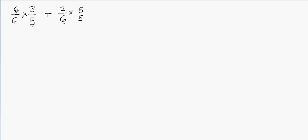We'll multiply the numerators and the denominators. 6 times 3 is going to be 18, and 6 times 5 will be 30. Then 2 times 5 is going to be 10, and 6 times 5 is going to be 30 again. Now you can see that I have the same denominators.